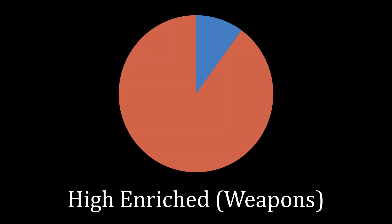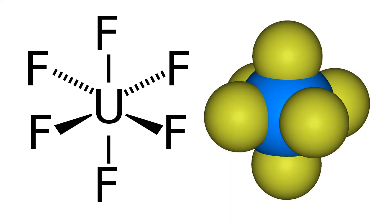Getting from naturally occurring uranium to highly enriched uranium is not a simple process. We don't have a chemical way of separating uranium-238 from uranium-235. The only thing we can do is exploit the slight weight differential — uranium-238 has three more neutrons than uranium-235 and is therefore slightly heavier. We start by converting yellow cake into uranium hexafluoride: one atom of uranium and six atoms of fluorine. Unlike yellow cake, uranium hexafluoride is a gas, which makes it easier to move around.